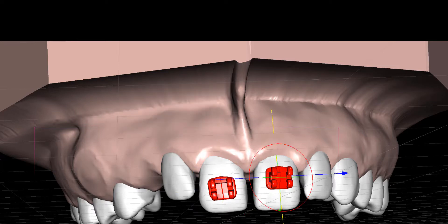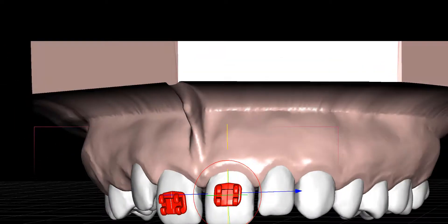This one is slightly different as you can see. It's an MBT prescription which is slightly different from the Roth because the point of application of the bracket is at 5 millimeters. In the Roth it's at 4.